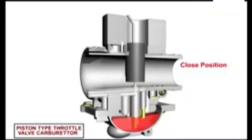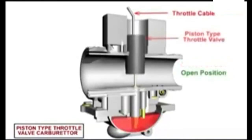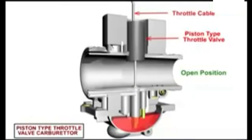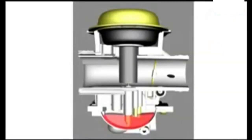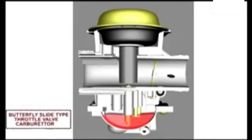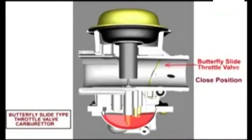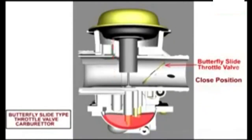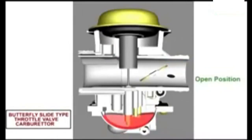In a piston or round slide type carburetor, the slide is operated directly by the throttle cable, which controls how much air can travel through the carburetor. In a butterfly slide or CV style carburetor, the throttle cable is attached to the butterfly, which controls the air into the carburetor and indirectly controls the slide moving up and down via the velocity and vacuum created by the air moving through the carburetor.